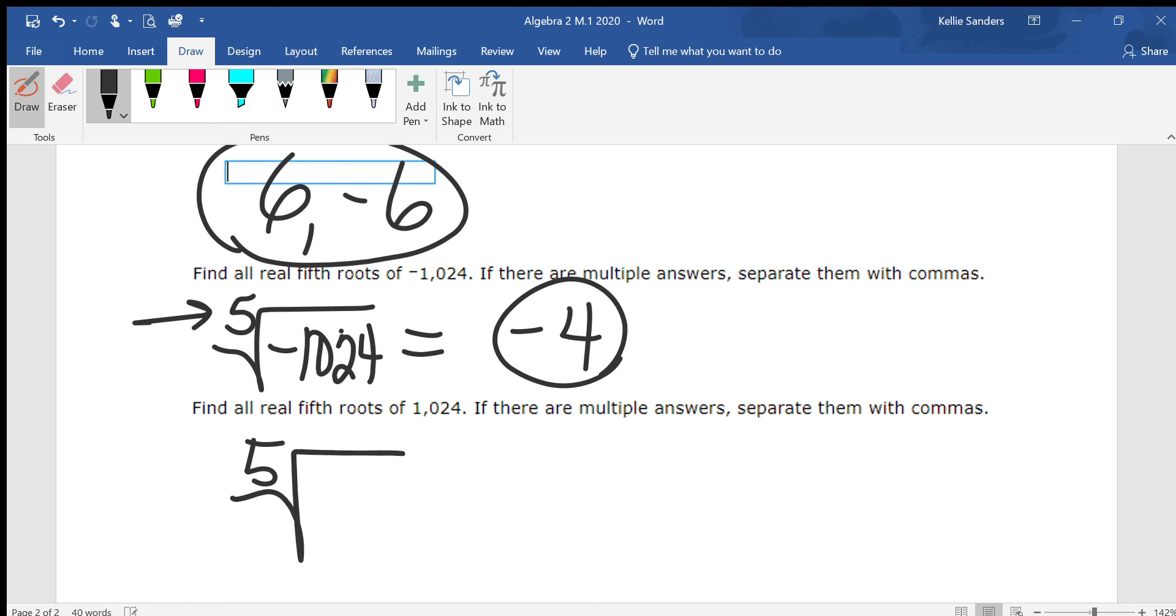The fifth root of 1024 is a positive 4. 1, 2, 3, 4, 5. If I have five negatives multiplied together, I get a negative answer. If I have five positives multiplied together, I'm going to get a positive answer.